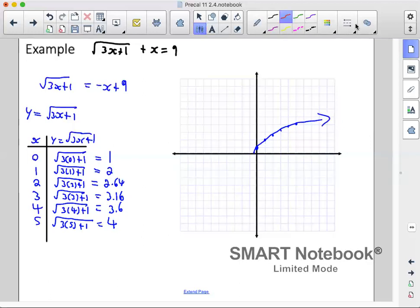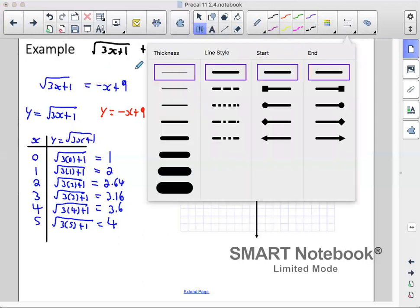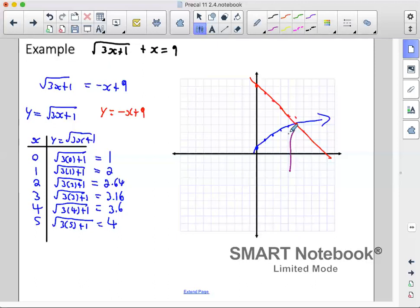Now for the other part of our graph, y equals negative x plus 9. This is a linear function. So we know we have a y-intercept at 9 with a slope of negative 1. We can see from our graph that our answer is x equals 5.